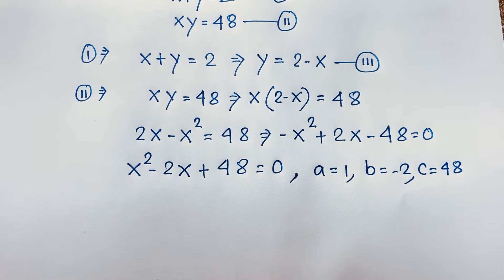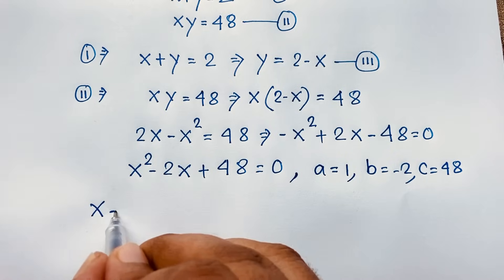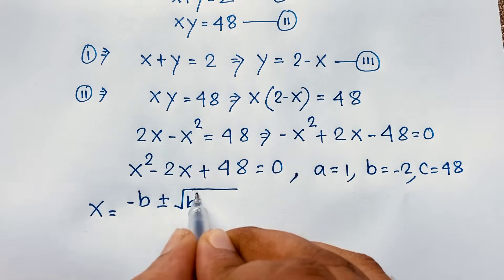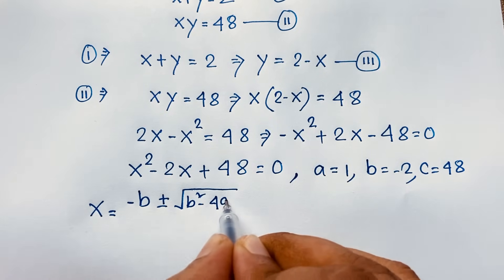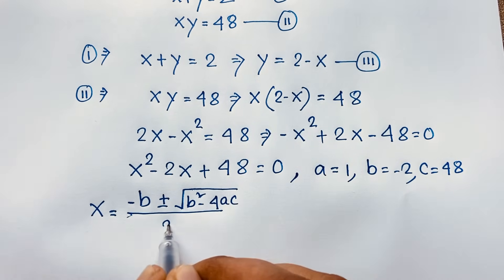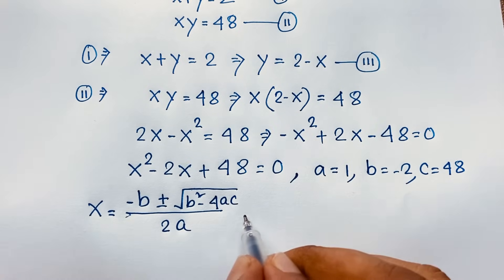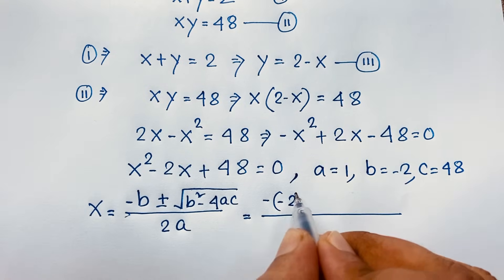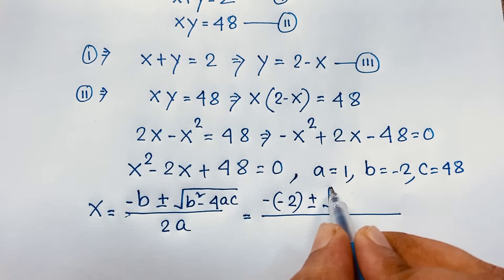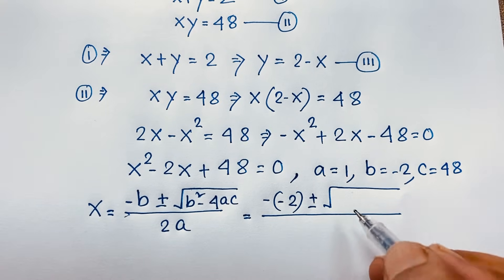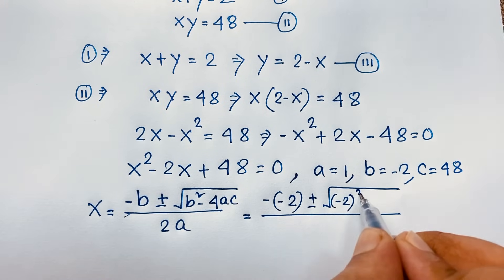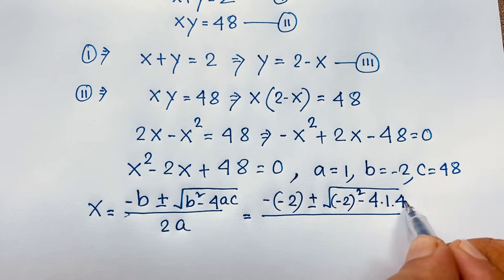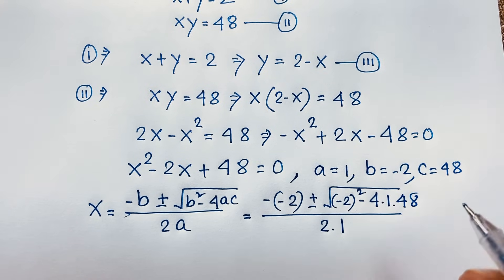Now x equals negative b plus or minus square root of (b squared minus 4ac) over 2a. Applying this quadratic formula: negative b, where b is negative 2, then plus or minus square root of (negative 2) whole squared minus 4 times a times c, where a is 1 and c is 48, over 2a where a is 1.